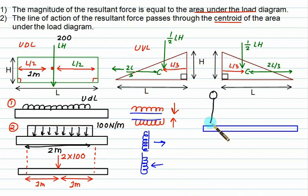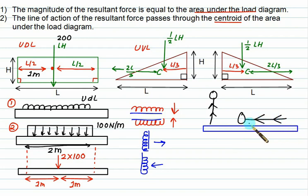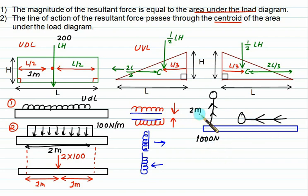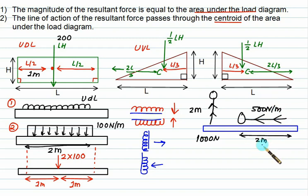The idea of UDL is that a person standing is a point load, but if the same person lies down, their weight is distributed over a particular length — that is UDL. For example, if a person weighs 1000 N and has a height of 2 m, the UDL equals 1000 divided by 2, which is 500 N/m over a span of 2 m, and the total is still 500 × 2 = 1000 N.